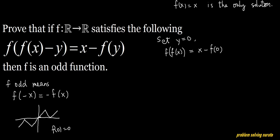In particular, if we set x equals zero in this relationship — let's call it star — we get a relationship about f(0). Remember we are trying to prove f(0) = 0, so naturally we want to get something about f(0).